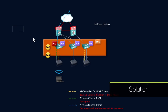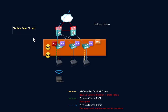All right, so what do we see? We've got a switch peer group. We have a mobility anchor in some of our wireless LAN controller modules — wireless controller modules — and we have a mobility controller defined on one of those wireless LAN controller modules. We have the point of presence, and then we have the point of access.